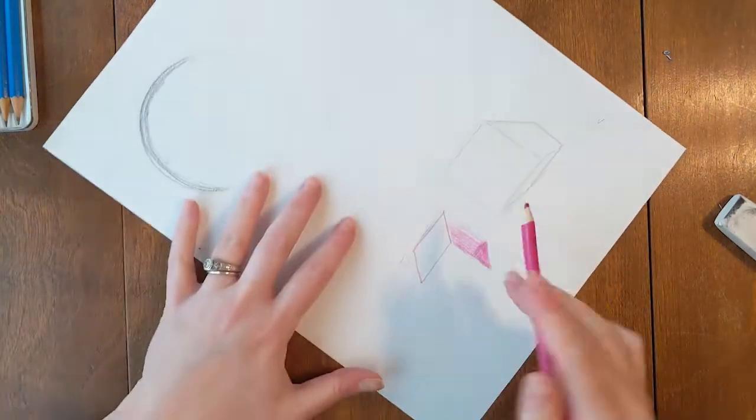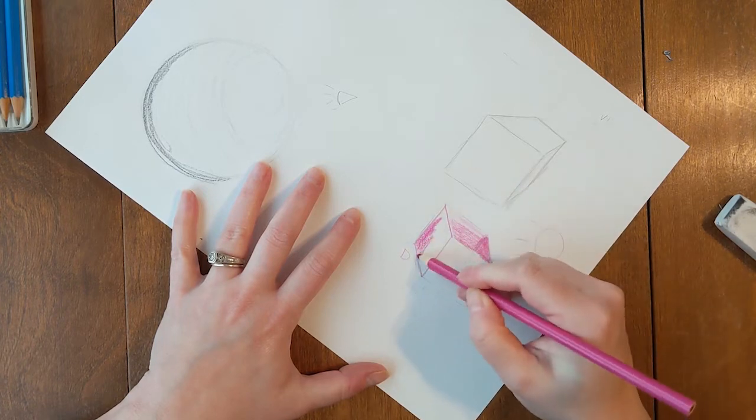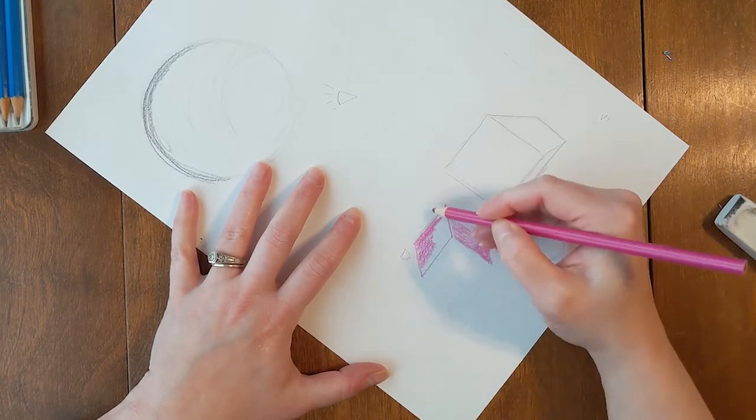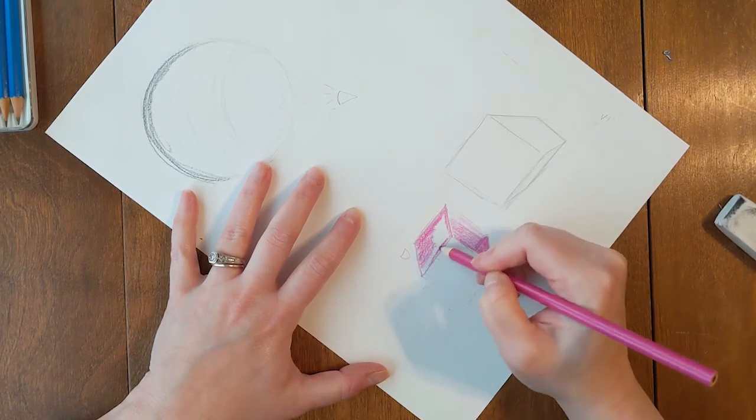So again, turning my paper so I'm comfy. And you can see I'm coloring in one direction. I'm following the shape of the box. I'm not doing this random scribbly mess. Scribble monsters make me sad.